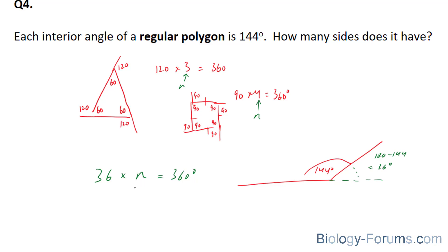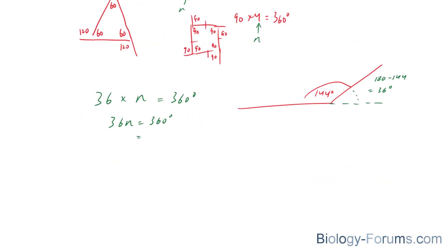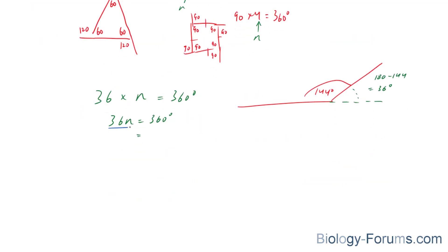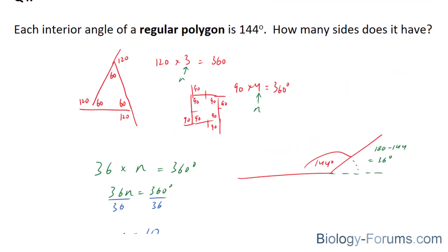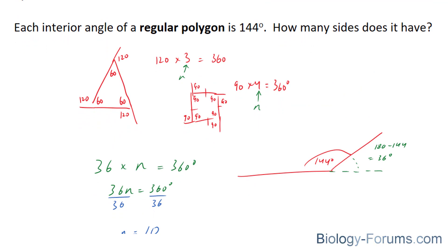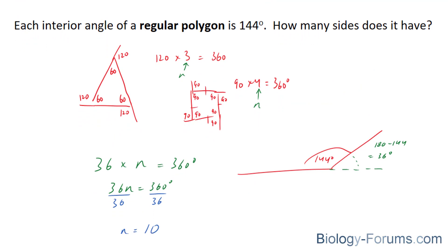And you have to either guess and check, depending on the level that you're at, or you can solve for n. You can solve for n quite easily by dividing both sides by 36. And if you divide both sides by 36, you get an n value of 10. And that is how to figure out the number of sides for this regular polygon. Let me give you a second to look at that.